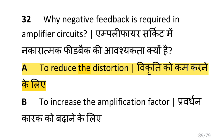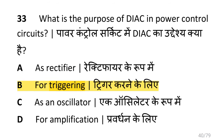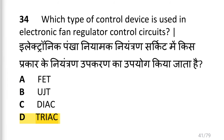Why is negative feedback required in an amplifier circuit? i.e. to reduce distortion. What is the function or purpose of a DIAC in a power control circuit? i.e. for triggering.